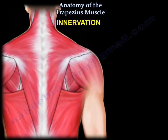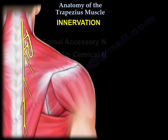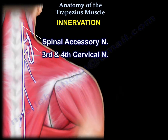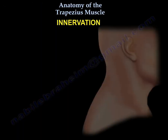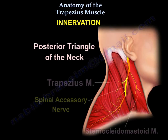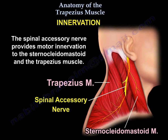Here is a picture of the posterior triangle of the neck. Here you can see the trapezius muscle and the spinal accessory nerve. The spinal accessory nerve provides motor innervation to the sternocleidomastoid and the trapezius muscle.